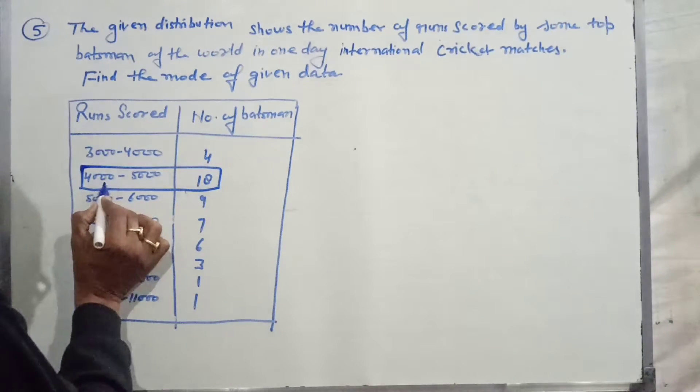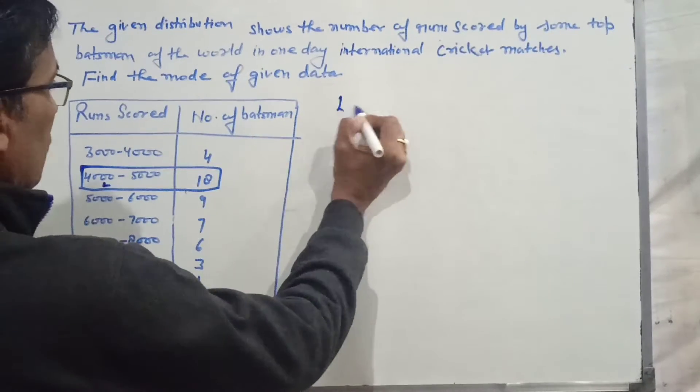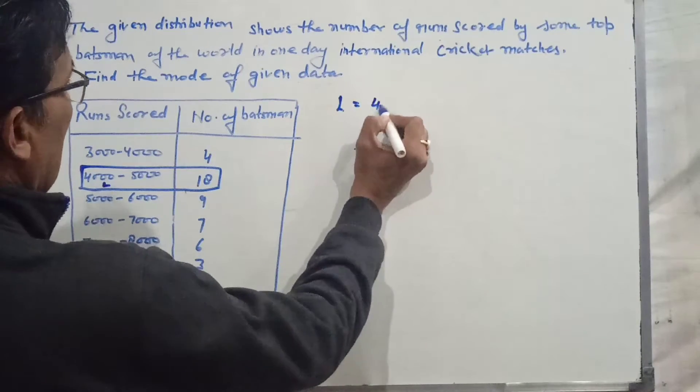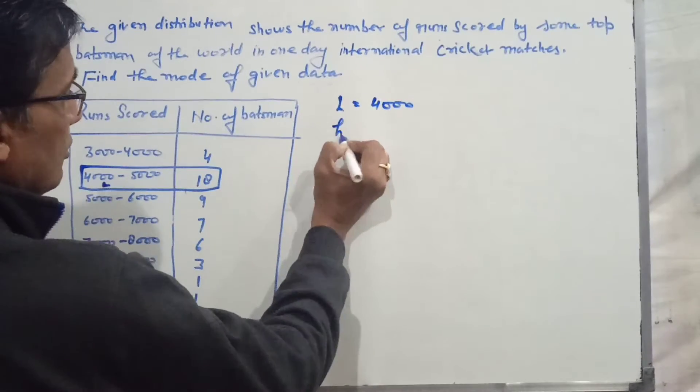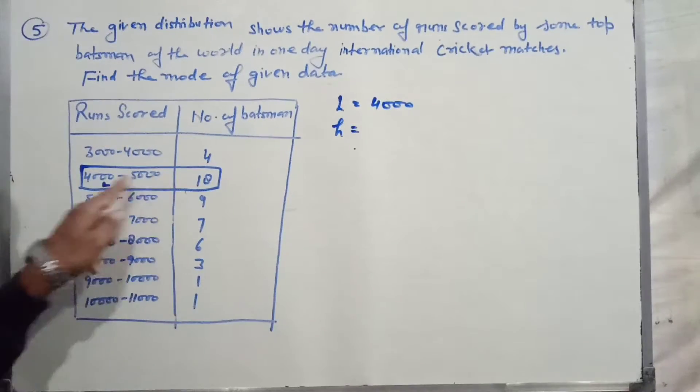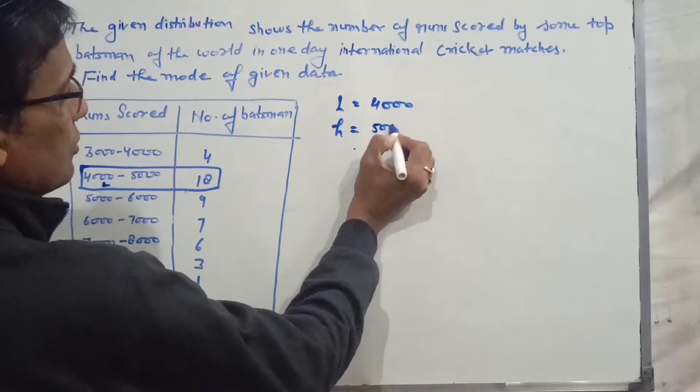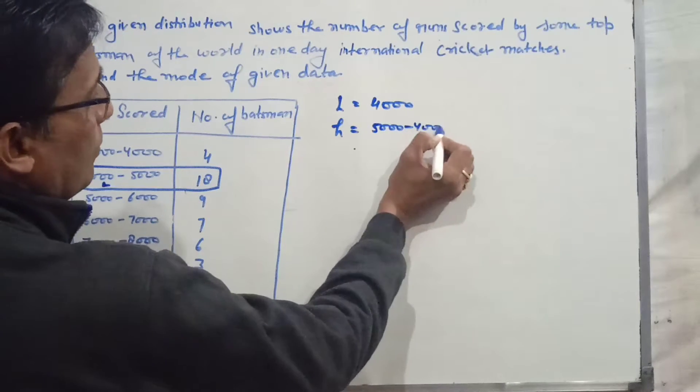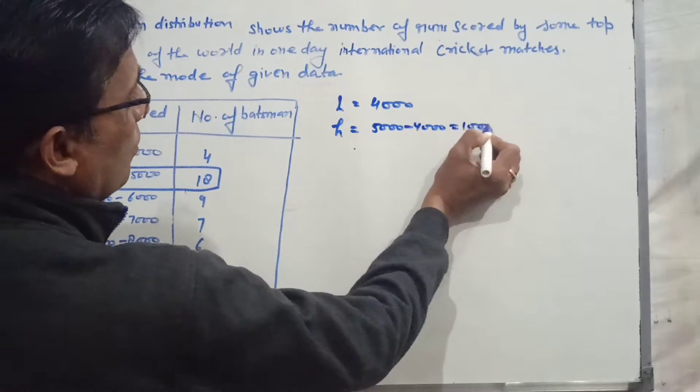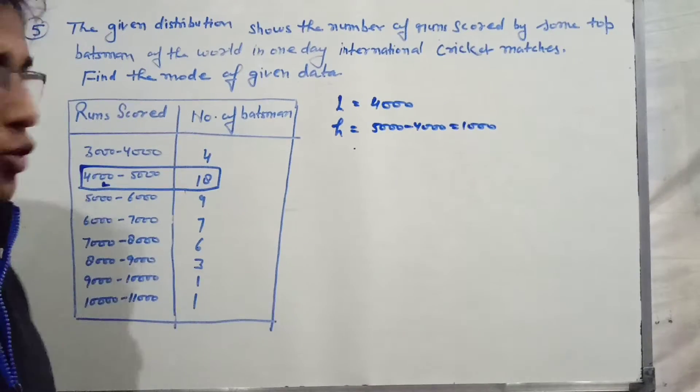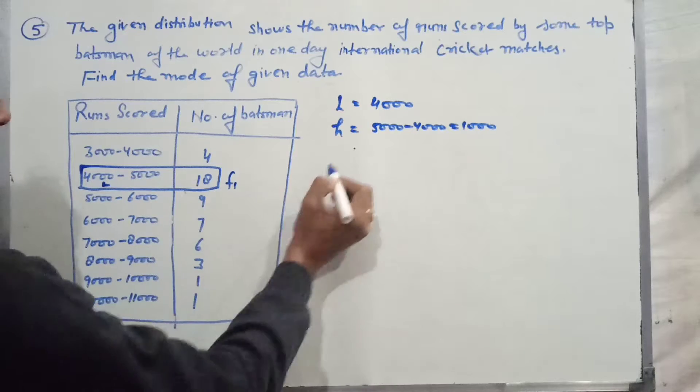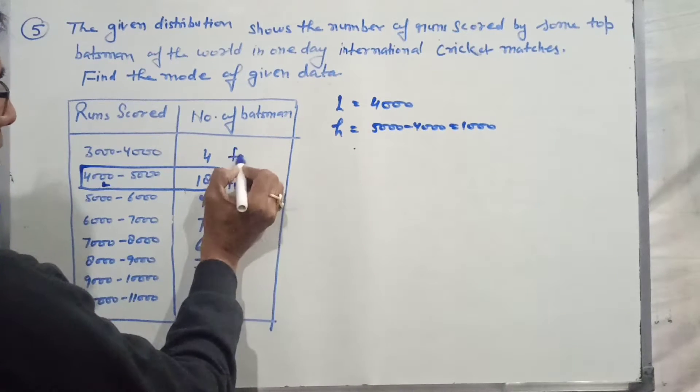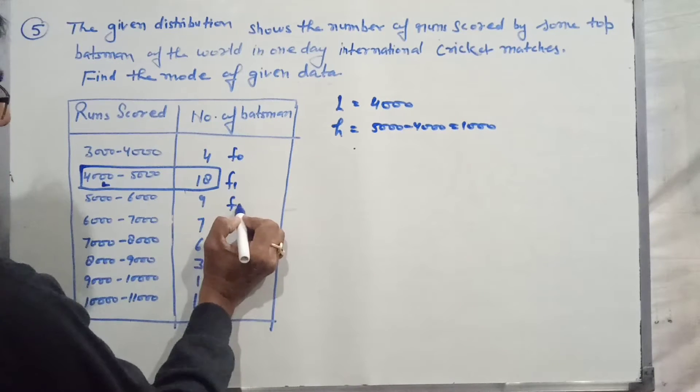The lower limit L is 4,000. You can represent H as 5,000 minus 4,000, which equals 1,000. The modal class is 4,000 to 5,000.